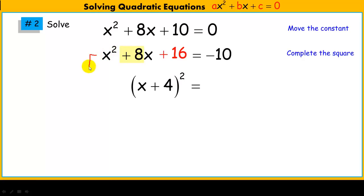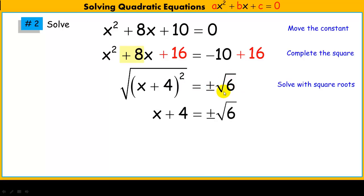Now I have an equivalent expression here, except for the fact that I need to add my 16 to both sides. Adding these, I get 6. Now I can solve using square roots. Take the square root of both sides. Square root of 6 is, again, irrational. We consider the positive and negative roots. Subtract 4 from both sides. Our solution is negative 4 plus or minus root 6.